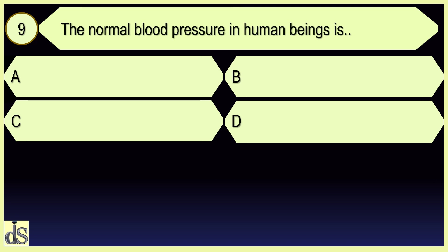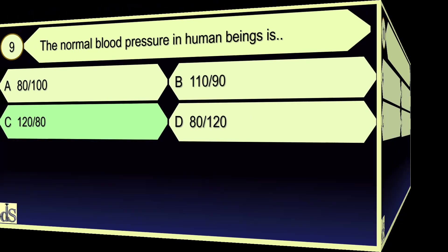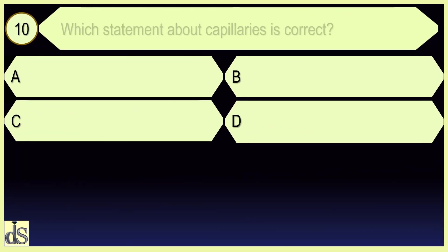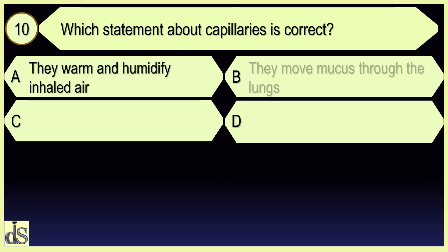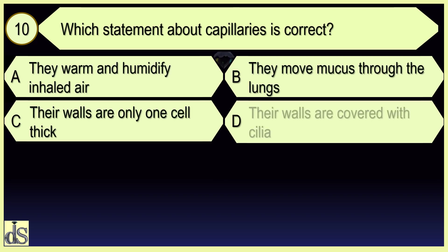The normal blood pressure in human beings is 120 by 80. Which statement about capillaries is correct? Their walls are only one cell thick.